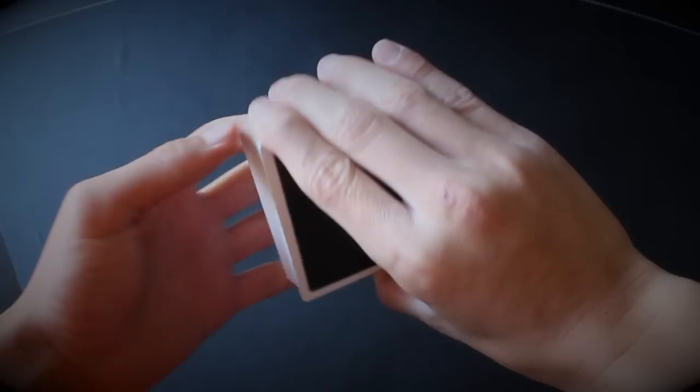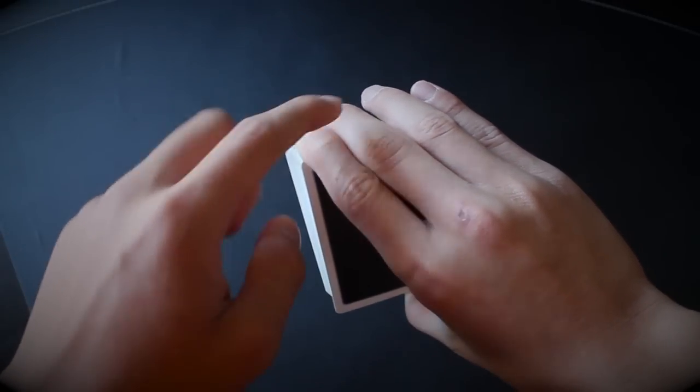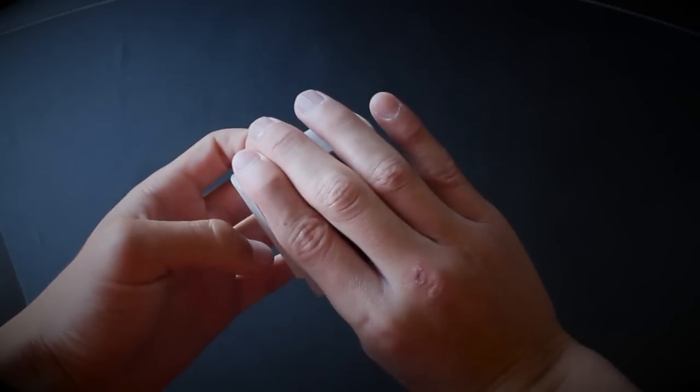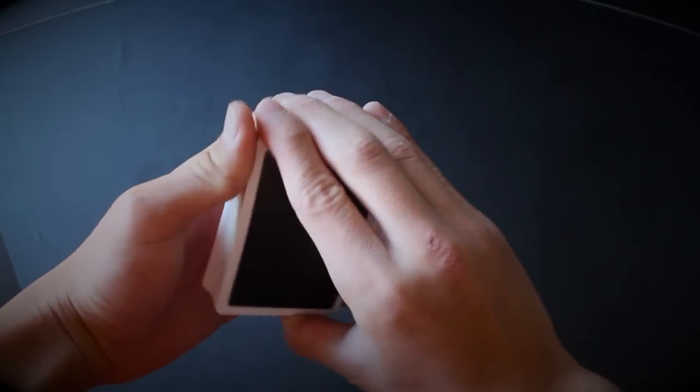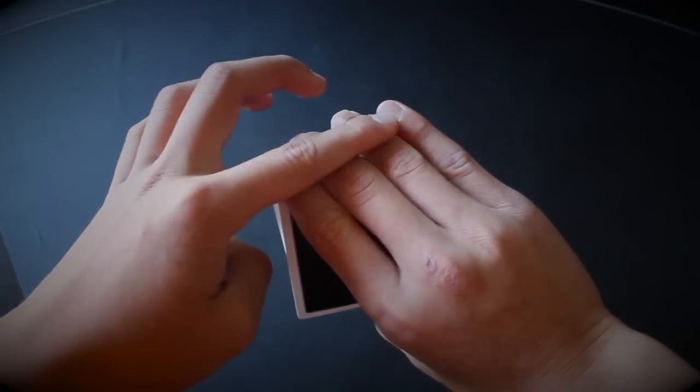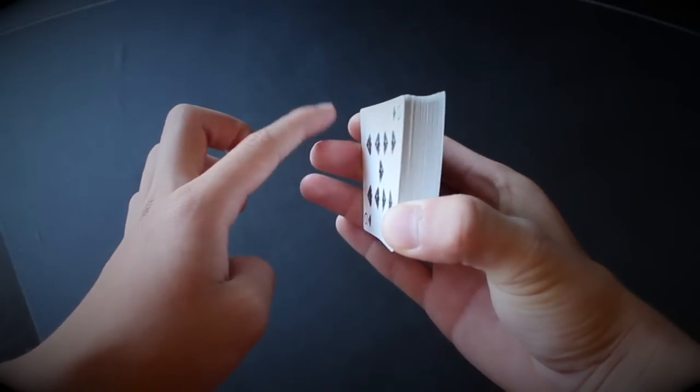For the rest of your fingers, place your pointer, middle, and ring fingers across the top edge of the deck. You don't want them straight up and down, but rather diagonal, making sure your pointer finger similarly